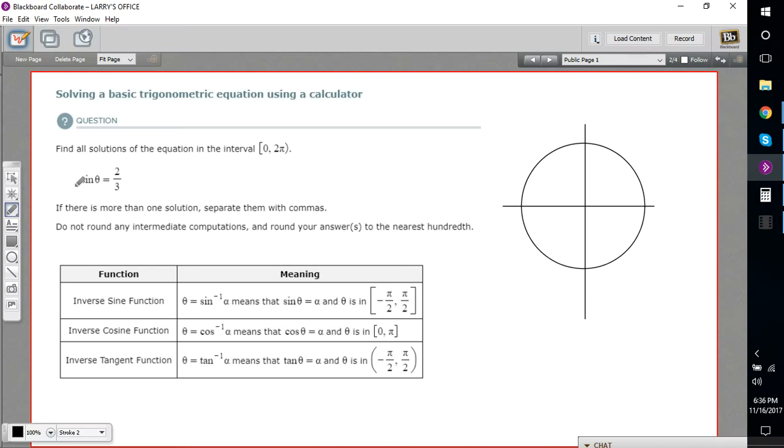In this problem, we have the equation sine of theta equals two-thirds. When you're trying to solve for theta, you would punch in two-thirds on your calculator and take the inverse sine of that. We'll do that, but there's more to the answer than that. This problem asks us to find all the solutions on the interval from 0 to 2π.